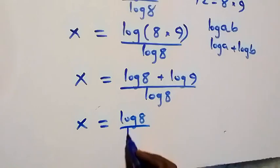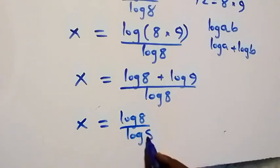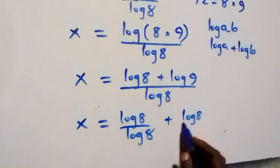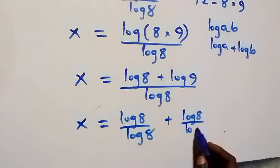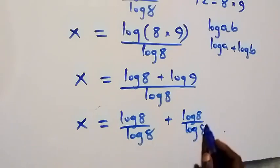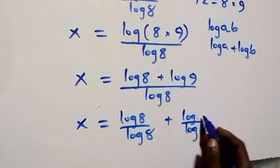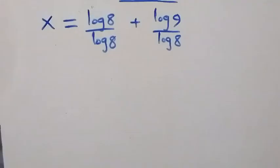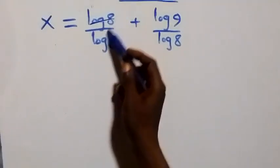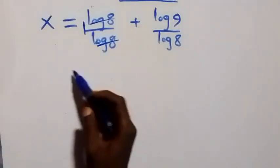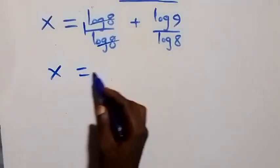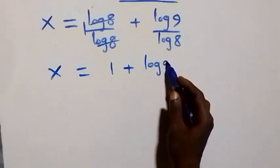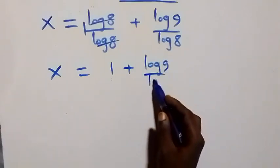This gives us x equals (log 8 plus log 9) over log 8. We can separate this fraction so that log 8 over log 8 simplifies to 1, giving x equals 1 plus log 9 over log 8.